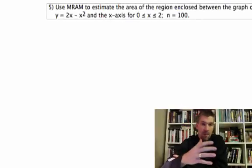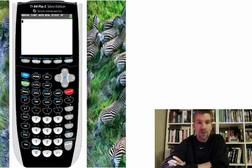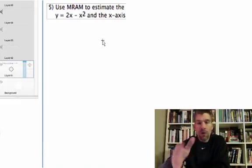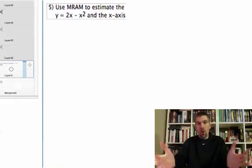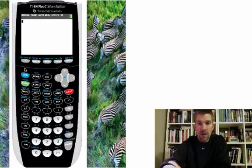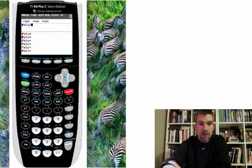All right, on this problem, what we want to do is use MRAM to estimate the area of a region enclosed by the graph of y equals 2x minus x squared and the x-axis. So we're going to go from 0 to 2. We're going to divide that area into 100 rectangles. So arm yourselves with your calculators. I'm going to demonstrate using the TI-84.